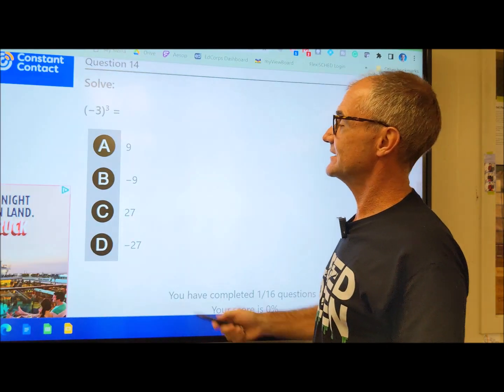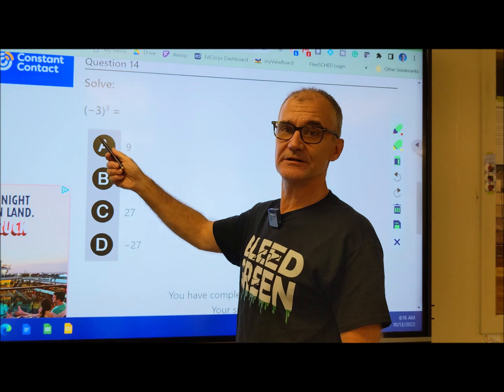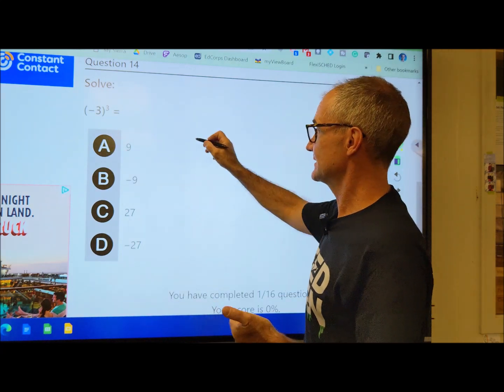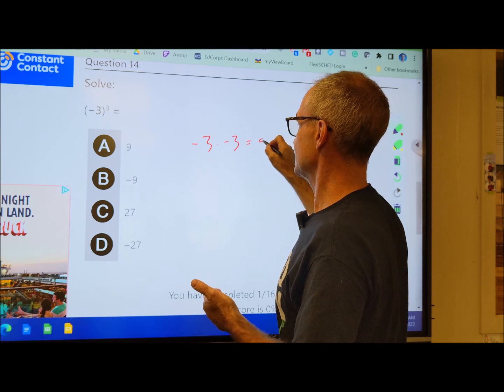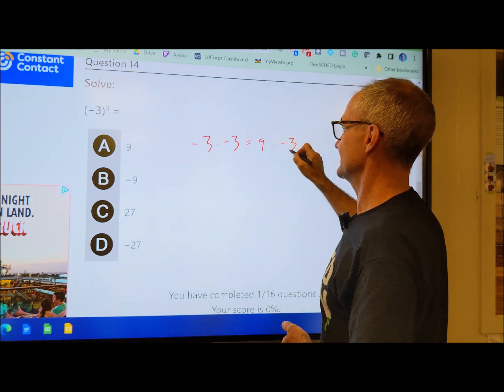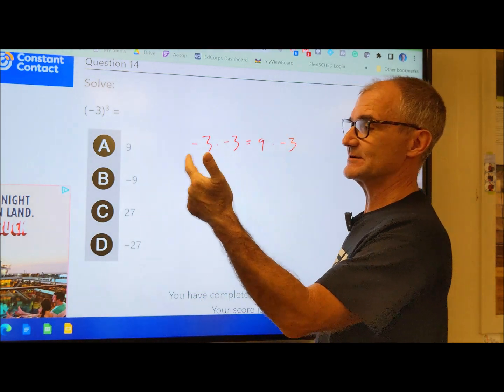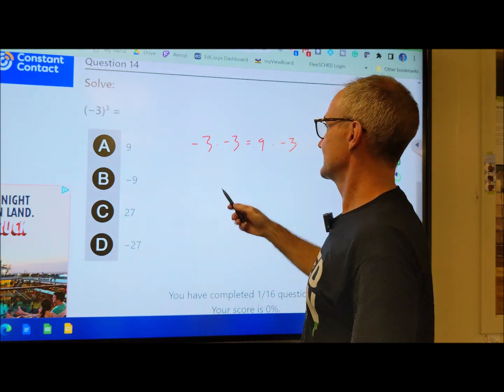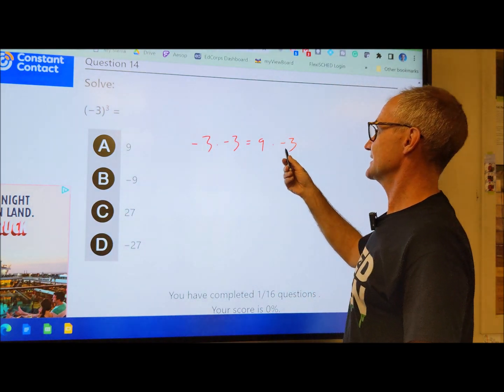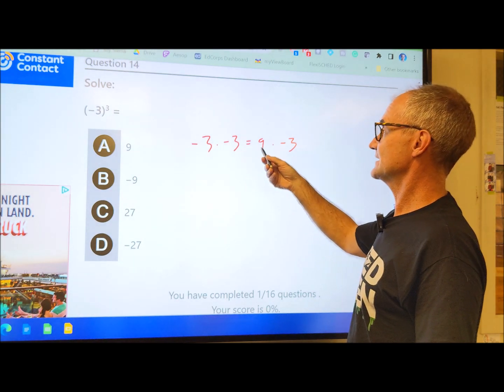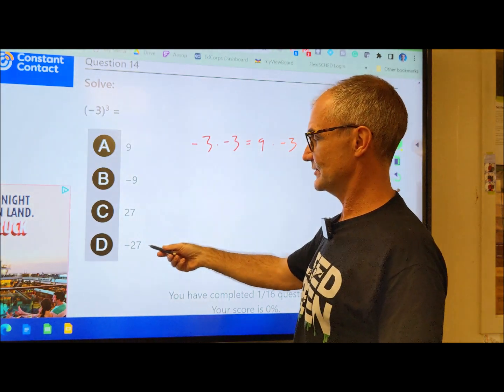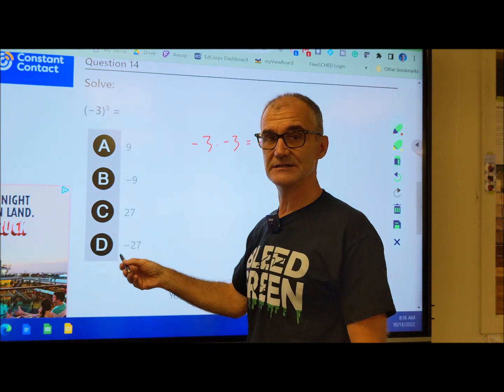Problem 14, negative 3 to the third. That's negative 3 times negative 3, which equals 9, times negative 3. So it's negative 3 times negative 3 times negative 3. It's going to give me a negative number because it's an odd. So negative 3 times negative 3 is 9, 9 times negative 3 is negative 27. Answer D.